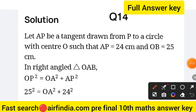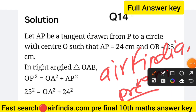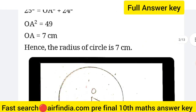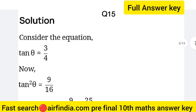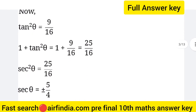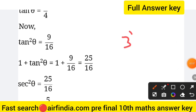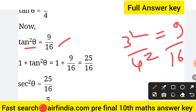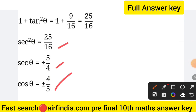If you want to download this answer PDF, just search arfindia.com pre-final 10th Math answer. Question 15: given that tan θ = 3/4, find sec θ. Here tan squared θ equals 9/16, since 3 squared is 9 and 4 squared is 16. So 1 plus tan squared θ equals 1 plus 9/16, which means 25/16. This equals sec squared θ, so sec θ is 5/4.